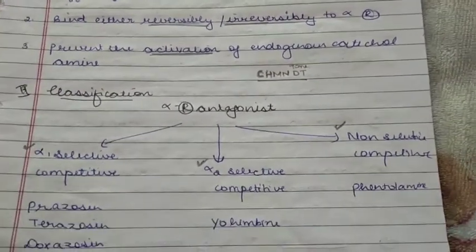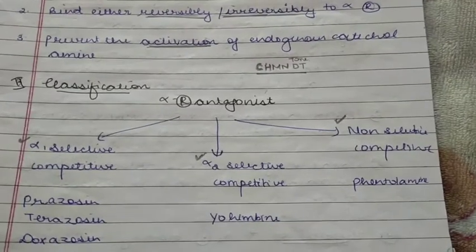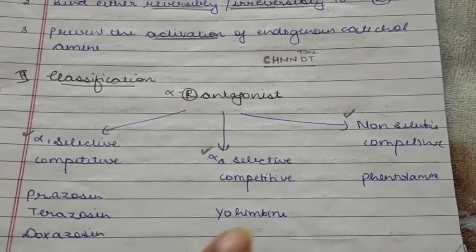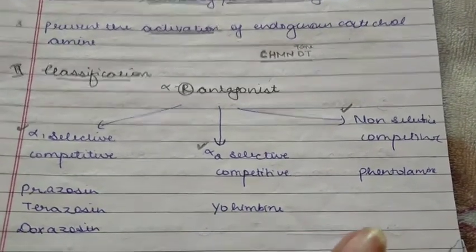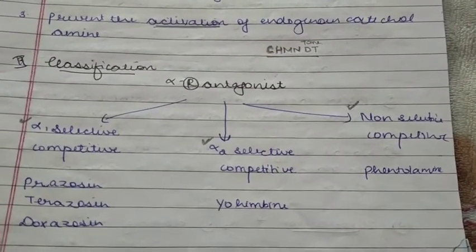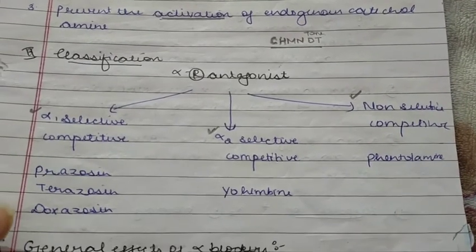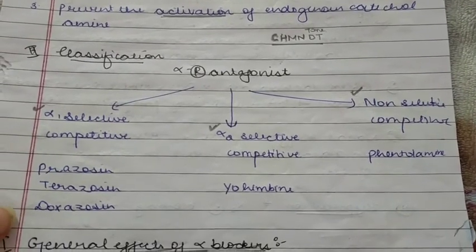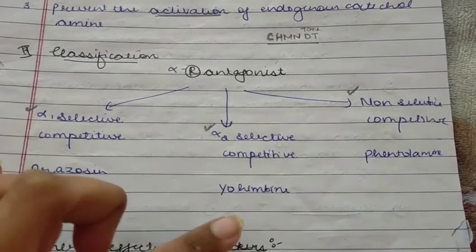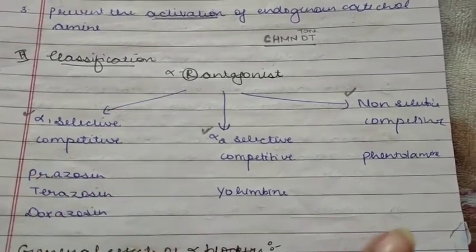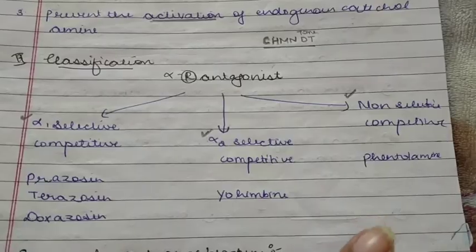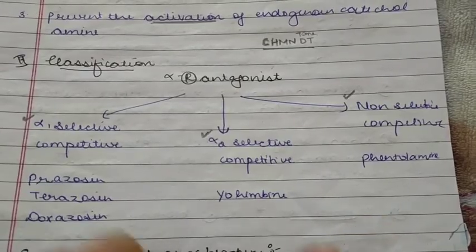Classification is very important. Alpha-1 selective, alpha-2 selective, and non-selective. Alpha-1 selective includes prazosin, terazosin, and doxazosin. For alpha-2 selective we have yohimbine, and for non-selective we have phentolamine and phenoxybenzamine.